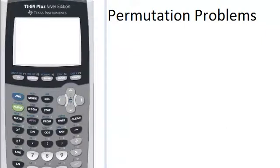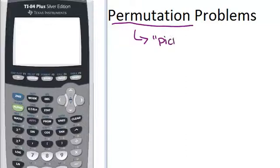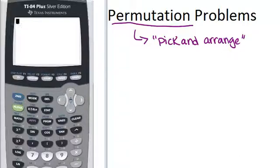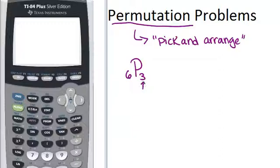In this video, we are going to learn about permutation problems and how to calculate permutations with your calculator. First, let's remember what a permutation is. A permutation is all about picking and arranging objects. In a permutation problem, you're always trying to figure out in how many ways can you pick and order or arrange a certain number of objects from a larger group. We notate this with something like 6P3, which means the number of ways to pick and arrange three objects from a set of six objects.